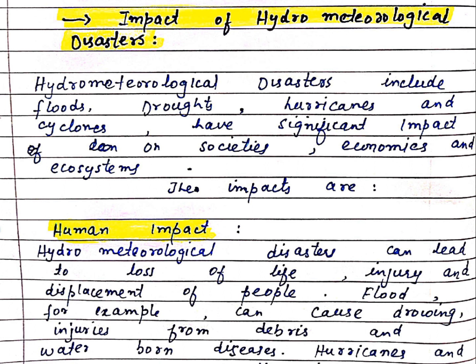The first impact is human impact. Hydrometeorological disasters can lead to the loss of life, injury, and displacement of people. For example, floods can cause drowning, injuries from debris, and water-borne diseases. When a flood comes, people go through injuries, debris, and many water-borne diseases.